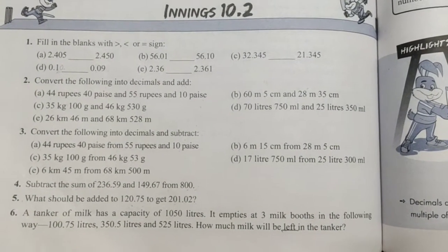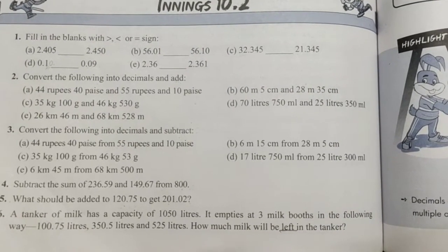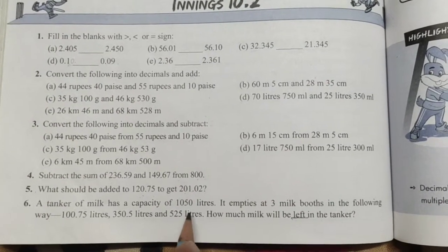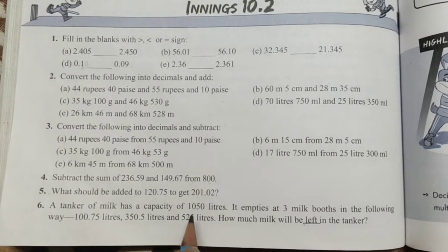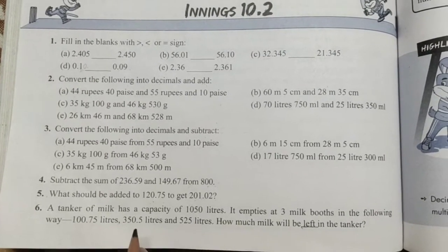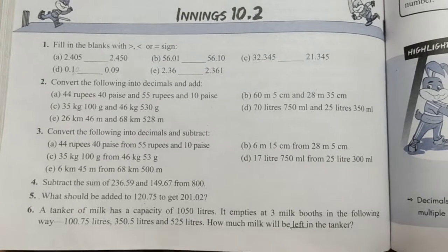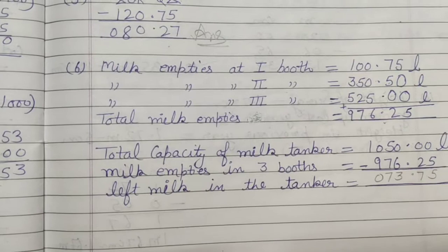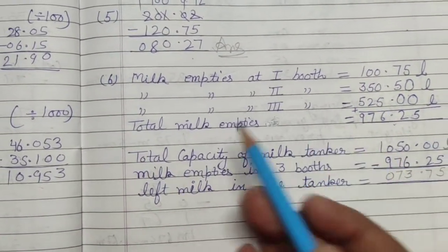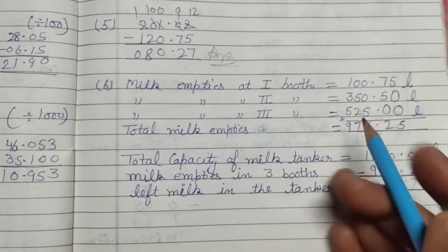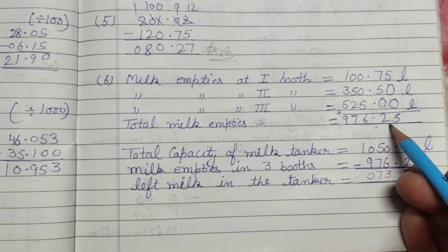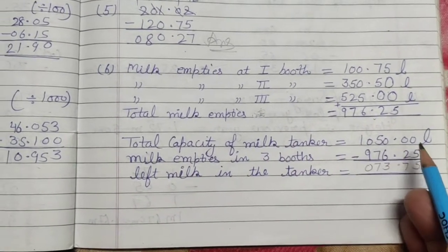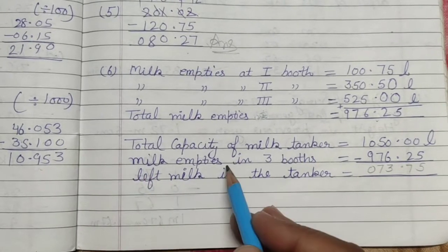How much milk will be left in the tanker? Now you have a clue that it will be minus from left. But first, we need to know how much milk is emptied. So first of all, we need to know how much milk empties and then how much milk will be left in the tanker. I have written that milk empties at first booth, then second, and then third. So total milk empties in 3 booths.